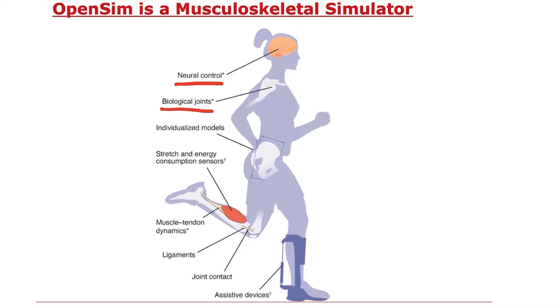There are individualized models. You can scale a model to represent the size and shape of any individual, and that's key because we frequently develop subject-specific simulations. There are ways to compute the properties of muscle-tendon dynamics, the energetic cost of locomotion. You can put ligaments into the model, calculate joint contact, and add various assistive devices.